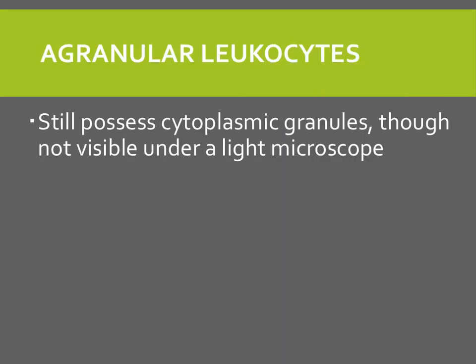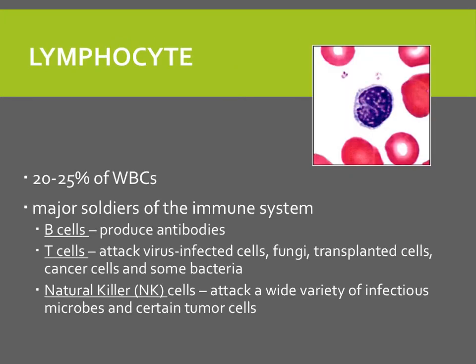Agranular leukocytes are so named because, even though they have cytoplasmic granules, you cannot see them under a light microscope, so they look as if they are agranular. Lymphocytes, an agranular white blood cell, make up 20 to 25% of white blood cells. They are the major soldiers of the immune system and are divided into B cells, T cells, and natural killer cells. B cells eventually produce antibodies. T cells attack virus-infected cells, fungi, transplanted cells, cancer cells, and some bacteria. Natural killer cells attack a wide variety of infectious microbes and certain tumor cells.